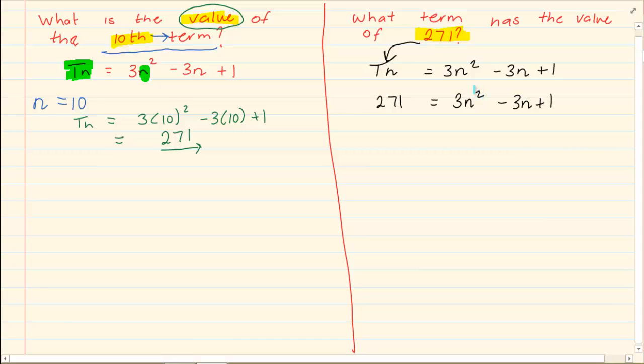If you look you will notice that it is to the power of 2. Which means we now have a trinomial. So trinomial says you must get the equation to equal to 0. So we move the 271 over and we now have a trinomial. 0 is equal to 3n squared minus 3n minus 270.